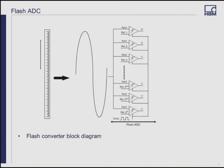Looking at the flash converter diagram: it's an N-bit converter employing 2^N minus one comparators. A resistive divider with 2^N resistors provides the reference voltage. The reference voltage for each comparator is one LSB greater than the reference voltage for the comparator immediately below it. Each comparator produces a one when its analog input voltage is higher than its reference voltage; otherwise the output is zero. If an analog input is between VX4 and VX5, comparators one through four produce ones and the remaining produce zeros. The point where the code changes from ones to zeros is where the input signal becomes smaller than the comparator reference voltage levels.